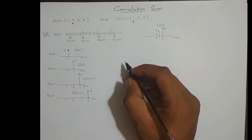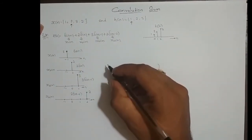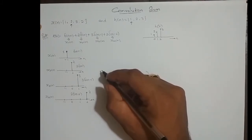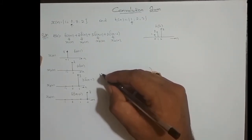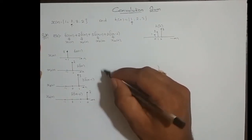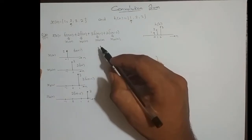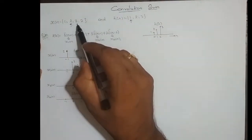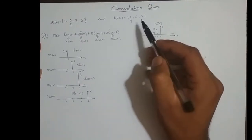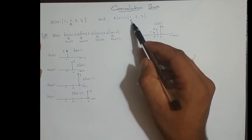Hey guys, in the previous video I took up an example to show how the output of an LTI system is actually called the convolution sum. And I will also try to convince you why it is called an LTI system from this example. In the previous example, the input to that LTI system was [1, 2, 3, 4] with sample at n=0 equal to 2, and the impulse response was [1, 2, 3] with sample at n=0 equal to 1.